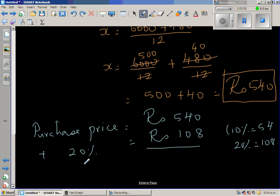And this is the sale price. The sale price is the purchase price plus 20%, which is 648. So our answer is right.